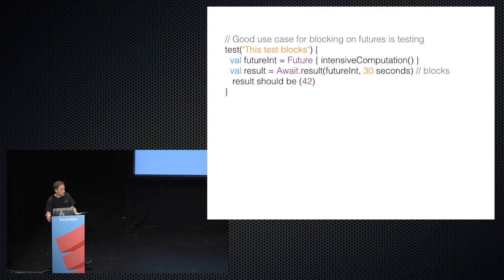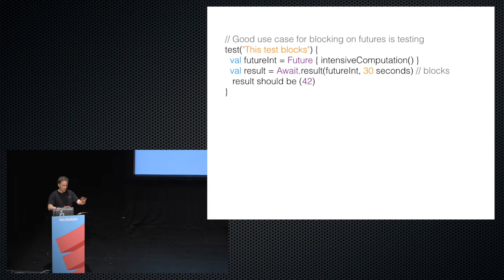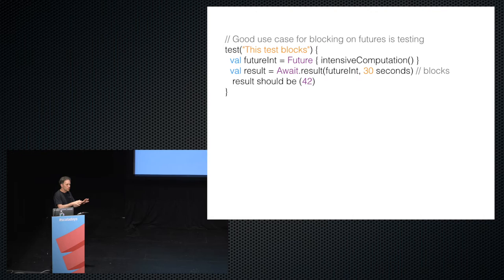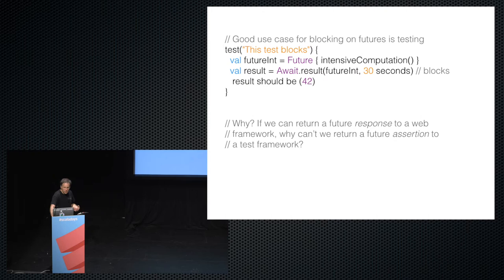When teaching the Play course, everyone says you should never block in your production code, but it's okay to block in tests. There are reasons for blocking in tests — you're not trying to maximize resource use, and most people just have a CI server. But if you have too many things going at once, tests can time out and you end up with test failures. So there's some use for blocking. But the question arose: if you can return a Future[Result] to a web framework, why can't you return a Future[Assertion] to a test framework?